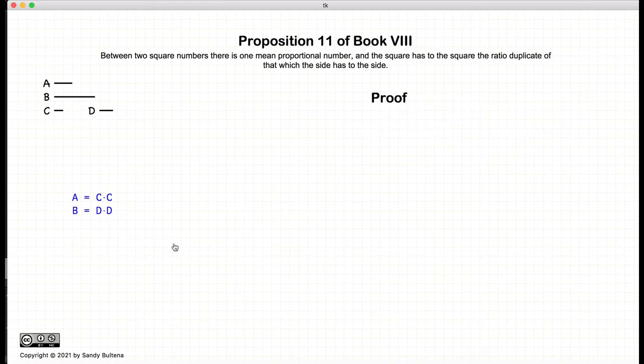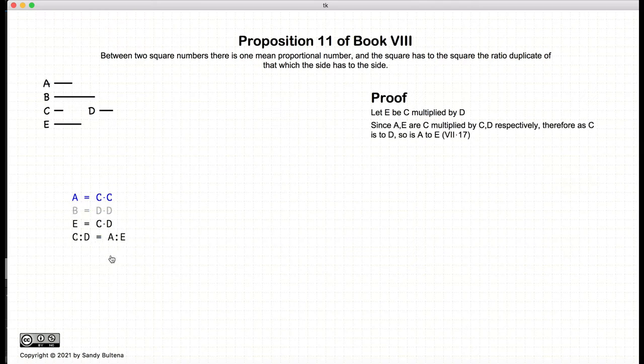So let's start with the proof. Again, we start off with two numbers a and b, which are square numbers, and their sides are c and d respectively. Let e be a number such that it is c multiplied by d.